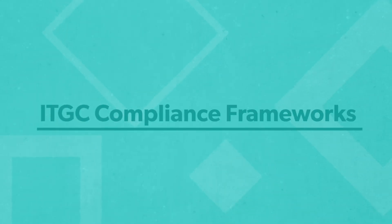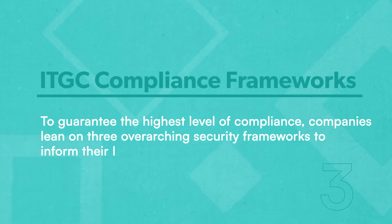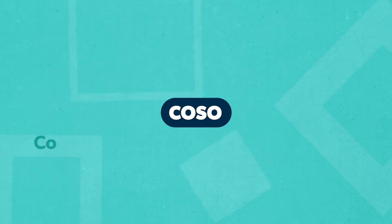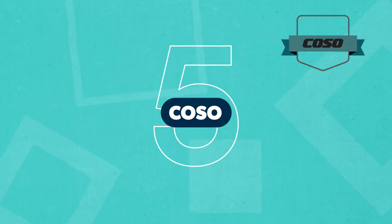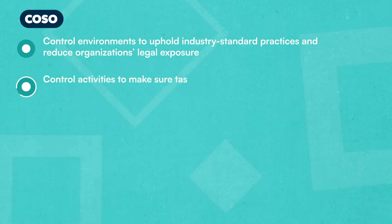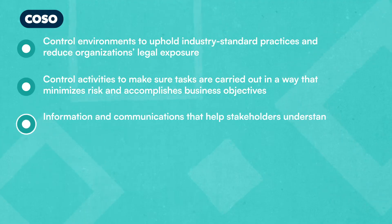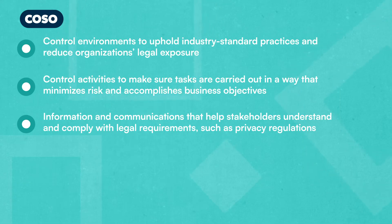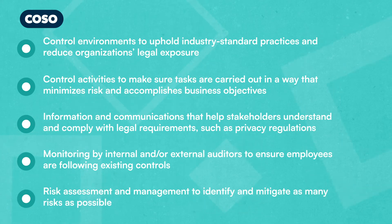Now let's talk about ITGC compliance frameworks. To guarantee the highest level of compliance, companies lean on three overarching security frameworks to inform their ITGCs. The first is COSO. The Committee of Sponsoring Organizations framework integrates controls into everyday business processes that validate ethical and transparent operations. COSO has five requirements: one, control environments to uphold industry standard practices and reduce organizations' legal exposure; two, control activities to minimize risk and accomplish business objectives; three, information and communications to help stakeholders understand and comply with legal requirements such as privacy regulations; four, monitoring by internal or external auditors to ensure employees are following existing controls; and five, risk assessment and management to identify and mitigate as many risks as possible.